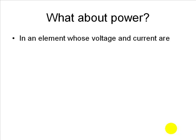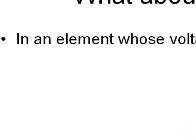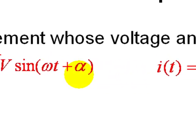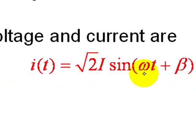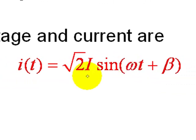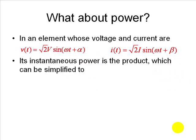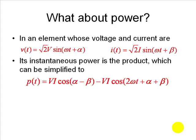Let's say we have an element whose voltage and current are sinusoidal. The voltage is a function of time with an RMS value v, an angular frequency omega, and a phase shift alpha. The current through that element has the same angular frequency omega, an RMS value i, and a different phase beta. The instantaneous power is obtained by multiplying v(t) with i(t), giving us this result.